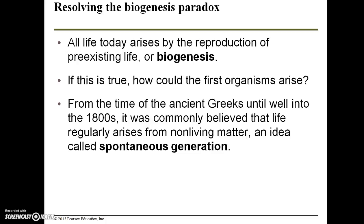All life today arises by the reproduction of pre-existing life — this term is called biogenesis. But if this is true, how could the first organisms arise? From the time of the ancient Greeks until well into the 1800s, it was commonly believed that life regularly arises from non-living matter, an idea called spontaneous generation. An example of this thinking is that people used to believe flies were spontaneously generated from rotting meat — not that rotting meat attracted flies who laid their eggs on it, but that rotting meat directly caused flies to spontaneously generate.